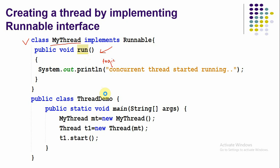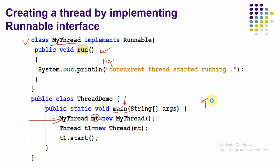Whenever you run a Java application, one main thread is started and controlled by the main function. The main function is the entry point for the main thread, and from there we create new threads. Once you design the class, the next step is to create an object for it — for example, MyThread t = new MyThread(). This object we then assign to a thread instance.